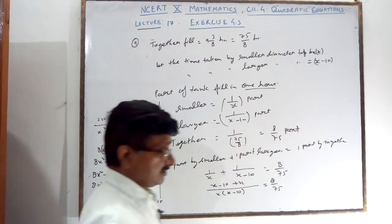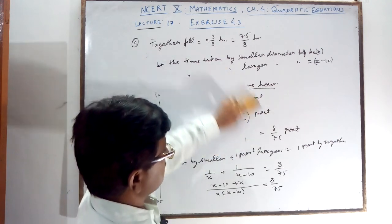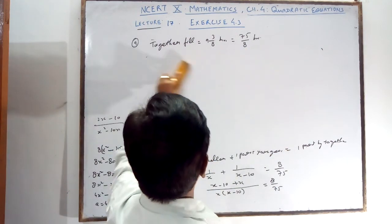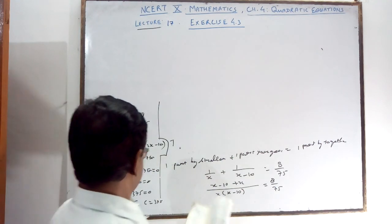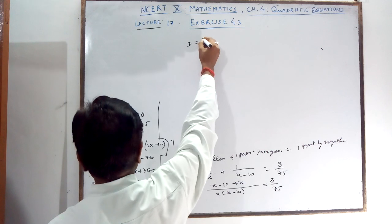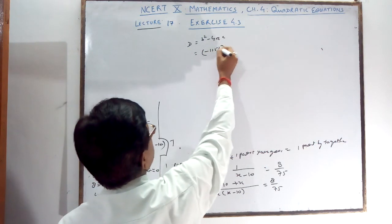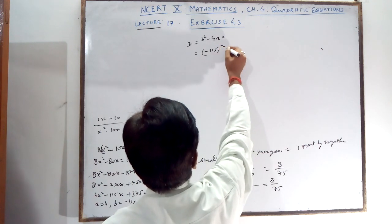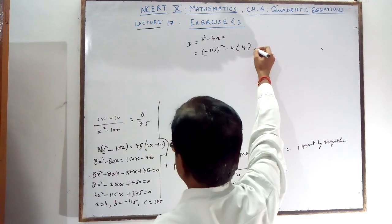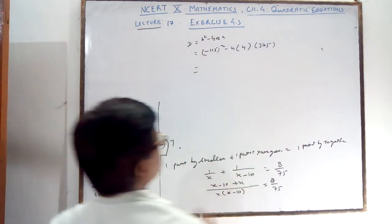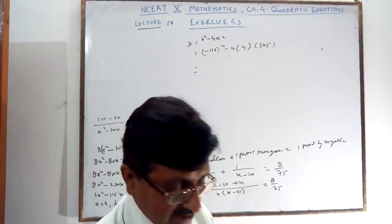We will solve it using the discriminant. Discriminant is equal to B squared minus 4AC. B squared is minus 115 squared, minus 4 into 4 into 375. 115 squared is 13225 minus 6000, giving 7225. The square root of 7225 is 85. So roots are equal to minus b plus minus under root b squared minus 4ac upon 2a, which gives 115 plus minus 85 upon 8. You will get the answers 15 and 25.